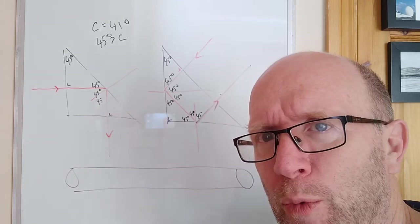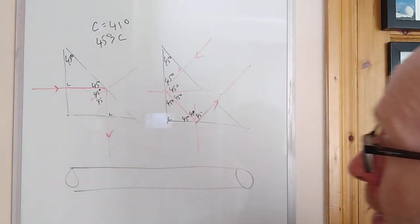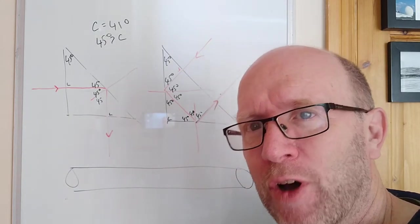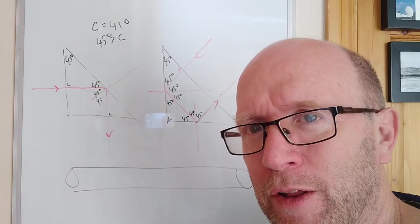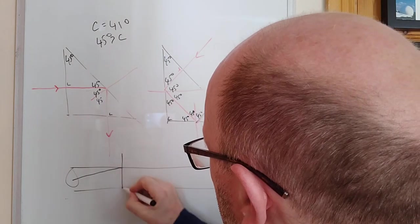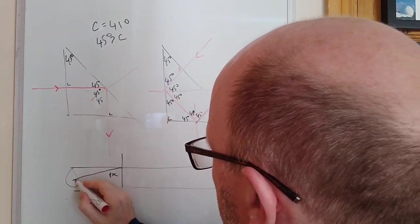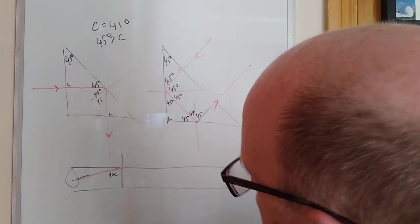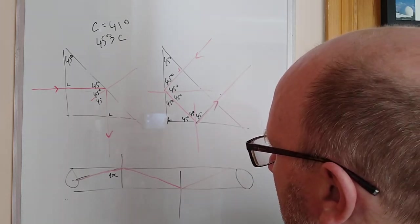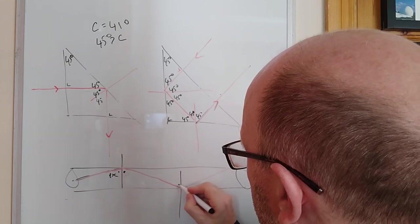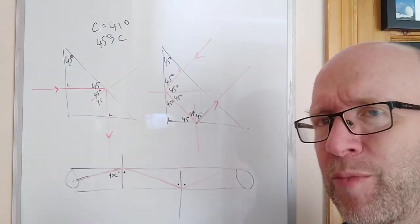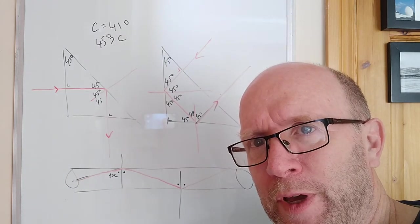In an optical fiber, you want to keep the signal inside. All you have to do is ensure the angle of incidence is always greater than the critical angle, so total internal reflection always occurs. Using alternate angles — since the fiber has parallel sides — each successive reflection hits the boundary at the same angle, always greater than the critical angle, so the light bounces along continuously.